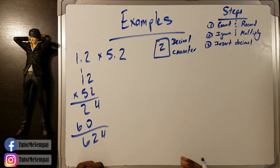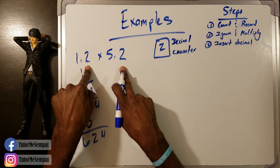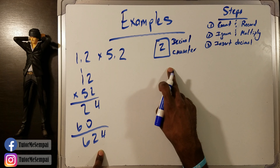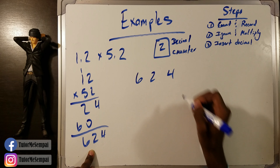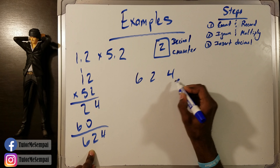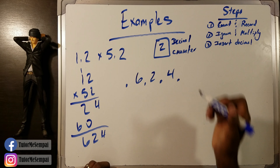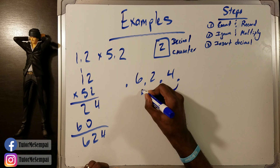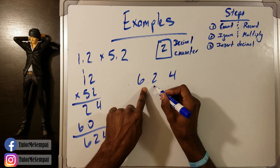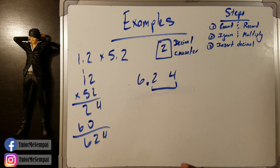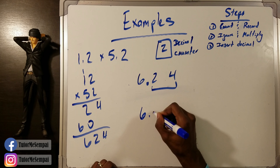Now that we have an answer, we can insert our decimal. We're going to use our decimal counter. We found that number by figuring out the total number of decimal spots from our initial example, and we're going to use this to put our decimal back into our answer. This says we have a decimal with two things behind it. So if our answer was 624, starting from the right we go 1, 2 — that means you have two numbers after your decimal. The answer for this is 6.24.